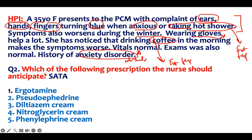Hands and fingers turning blue — when you wear gloves it gets better, when you take caffeine it gets worse, and the exam is completely normal. Anxiety is a distractor. What do you think is going on? This is called Raynaud's phenomenon. Patients have vessel spasms of the hand vessels, so blood flow decreases when exposed to extreme temperature — both extreme cold and hot. Tell them to wear gloves when cold outside, avoid caffeine, and decrease stress levels.